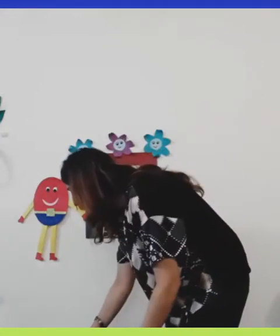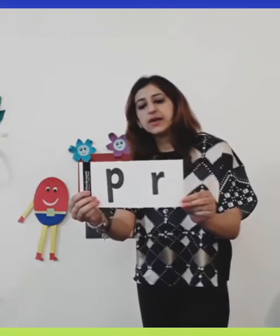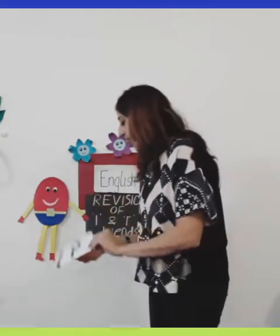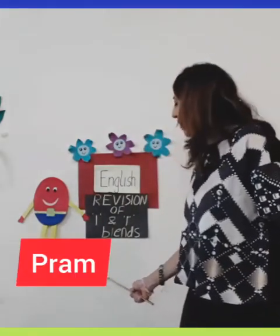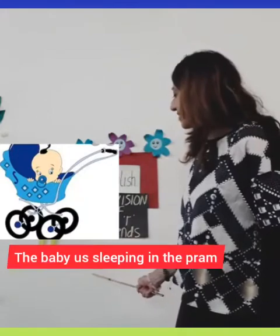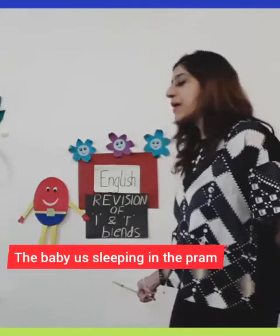Now we move on to our next word. What sound does this letter make? P. And what sound does this letter make? R. Together we hear the sound 'pruh'. And what word can we form with this sound? The word is 'pram'. Let's make a sentence — who sits in the pram, children? Babies, small children. Yes — the baby is sleeping in the pram.